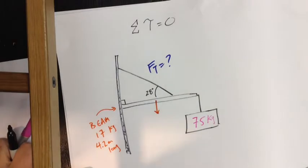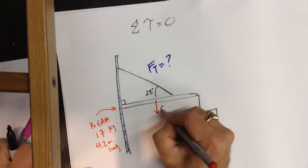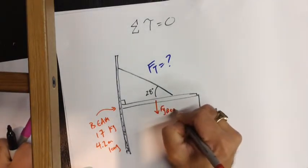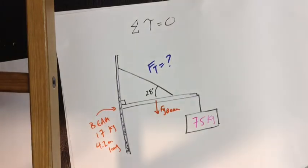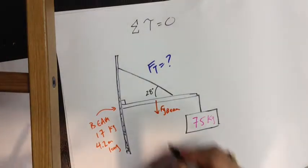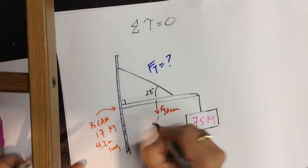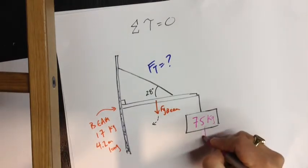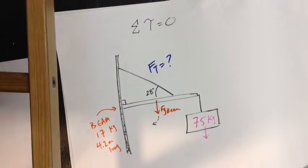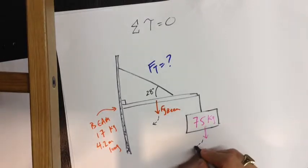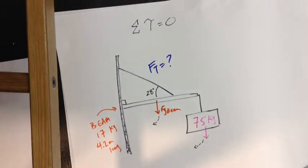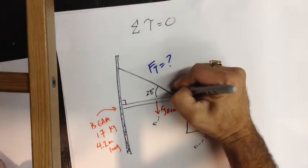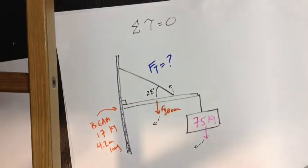The force of gravity acts in the centre of the beam and it creates a clockwise torque. The force of gravity out here on the suspended mass creates a clockwise torque. The tension force on the other hand will create a counterclockwise torque.